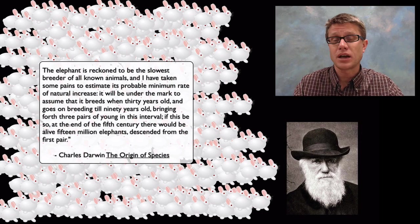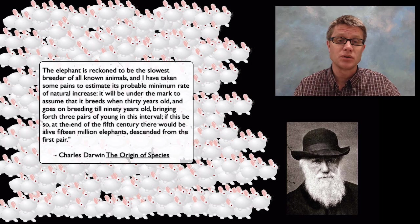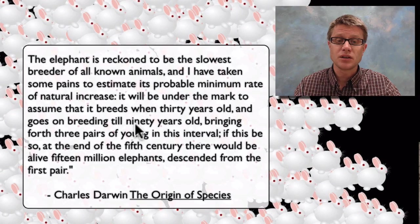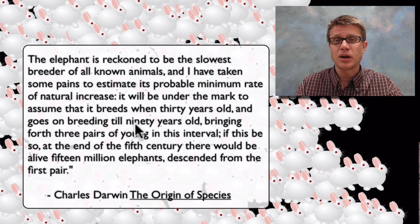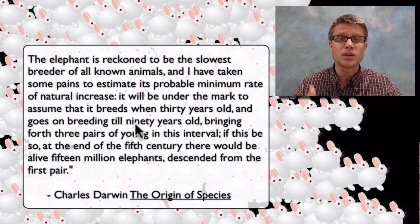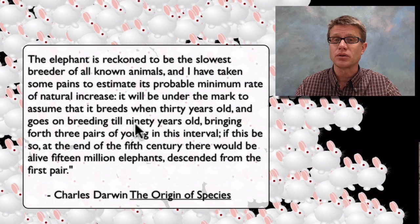And Darwin noted that as well. He looked at instead of rabbits, elephants. Elephants take a long time to reproduce. In other words they have to be 30 before they can reproduce. And they live until they're about 90. And what he found is that even though they might produce three pair of offspring during that period of time, if you just let them keep breeding over and over and over again, after 5 centuries or 500 years later, you're going to have 15 million elephants. And so exponential growth goes really quickly. And we know that it can't last forever.